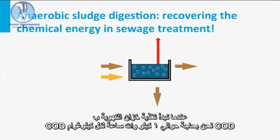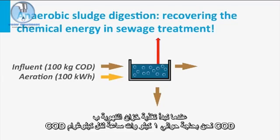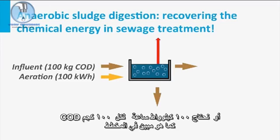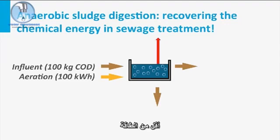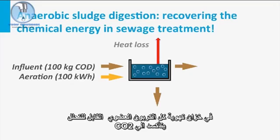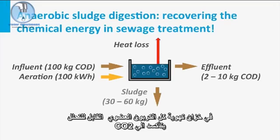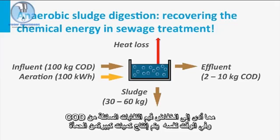When feeding the aeration tank with COD, about 1 kWh per kg COD is required — for 100 kg COD, 100 kWh is needed, as depicted in this scheme. This depends on the type of aeration system and treatment process. In the aeration tank, all biodegradable organic carbon is oxidized to CO2, resulting in low effluent COD values, while a high amount of sludge mass is produced.